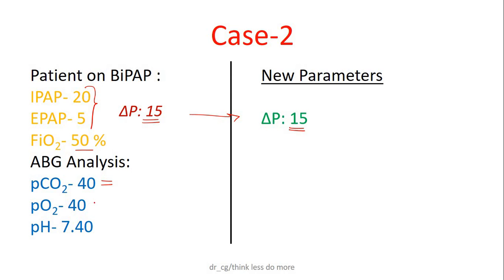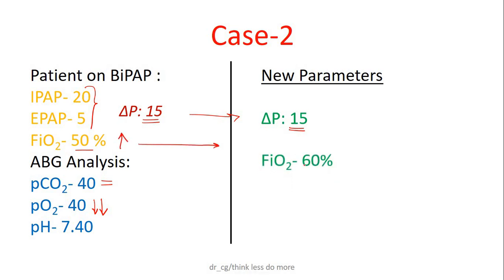Now see PO2 level — here it is 40, meaning it is very low. So we can increase our FiO2 to 60% from 50%. New FiO2 is 60% and there is no change in EPAP. So new required pressure difference is 15 — no change in IPAP and EPAP.